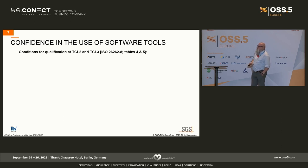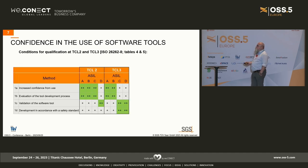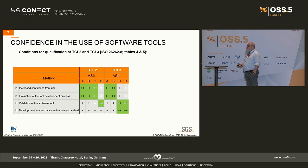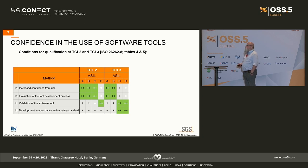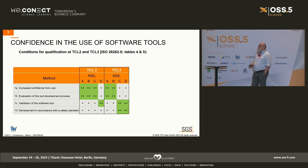When I have identified that I am TCL 2 or 3, I know I have to do something. ISO 26262 provides four ASL-dependent methods for TCL 2 and 3. First: increased confidence from use. Second: evaluation of the tool development process. Third: validation of the software tool. Fourth: development in accordance with a safety standard like ISO 26262.